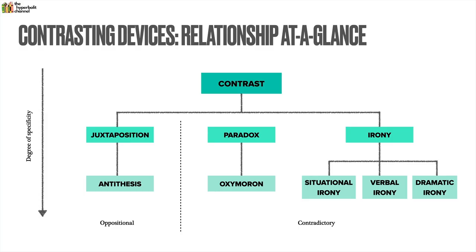Next up we've got contrasting devices. Contrast is an umbrella term, and underneath it you have three main buckets: juxtaposition, paradox, and irony. Juxtaposition deals with oppositional ideas, whereas paradox and irony deal with contradictory ideas. Underneath juxtaposition you've got antithesis, underneath paradox you've got oxymoron, and underneath irony you have three main types: situational, verbal, and dramatic irony. These devices are arranged according to their degree of specificity — the lower down the diagram, the more specific the literary device is in terms of its linguistic arrangement.